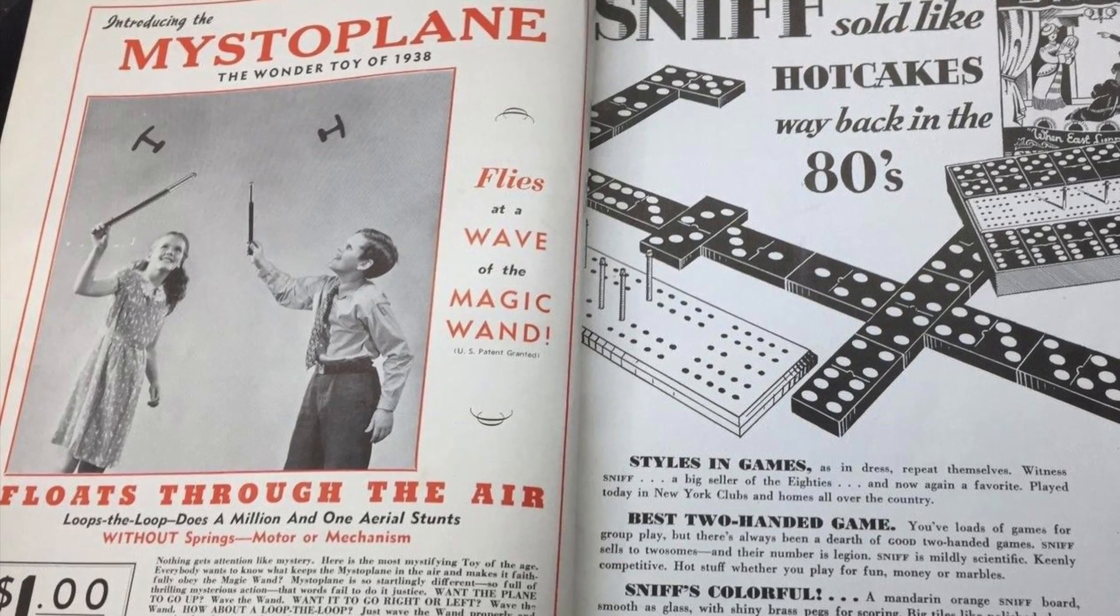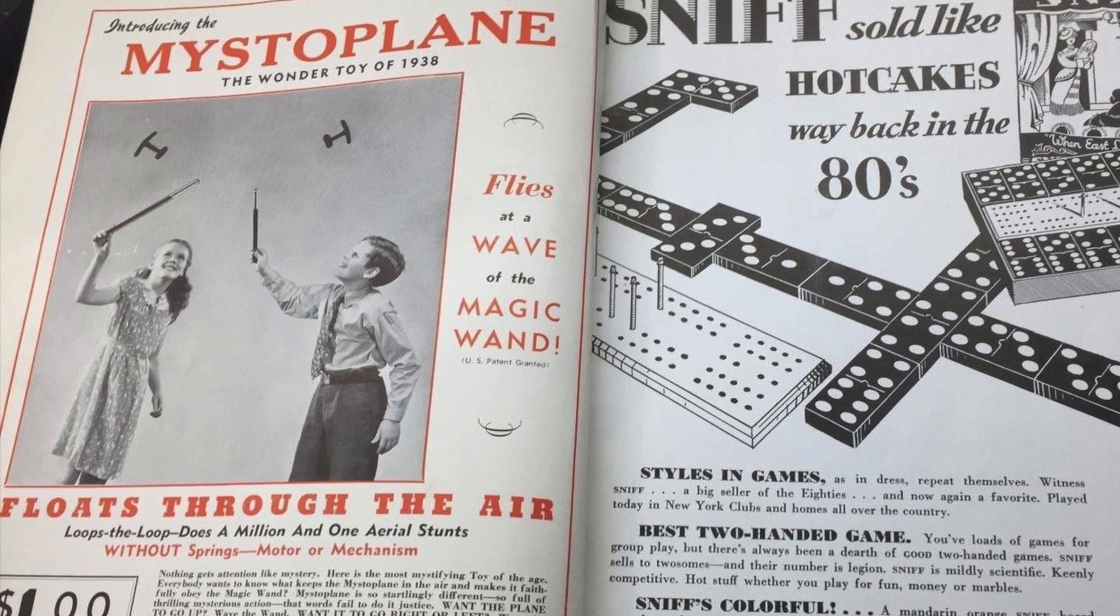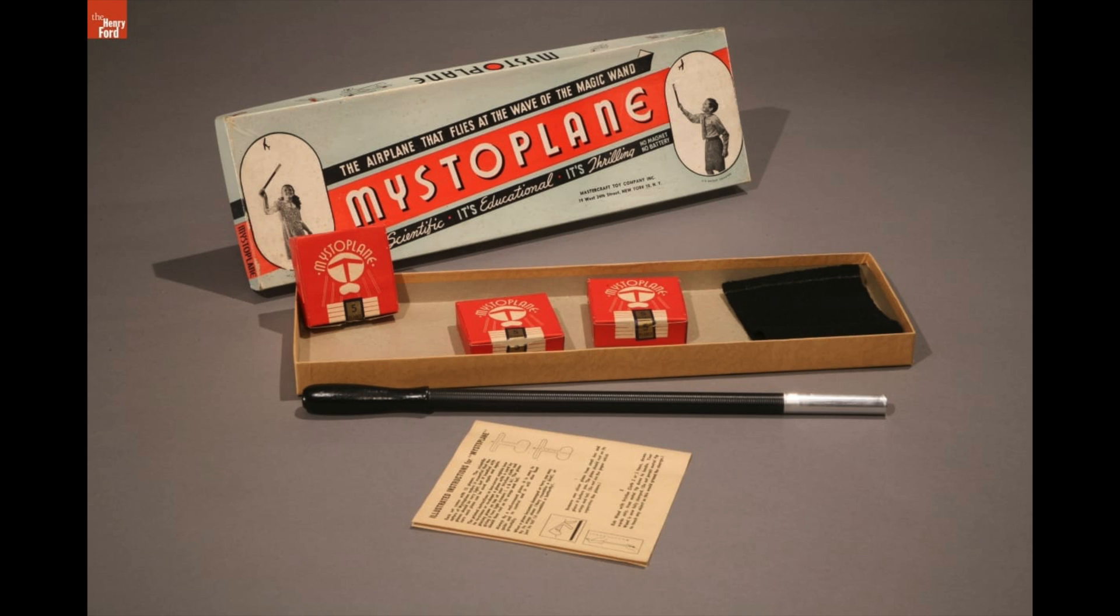And then you rub the magic wand with a cloth to charge it up with static electricity. When you move the wand near the thing, it'll make it float around in weird ways. Actually, it sounds kind of fun.